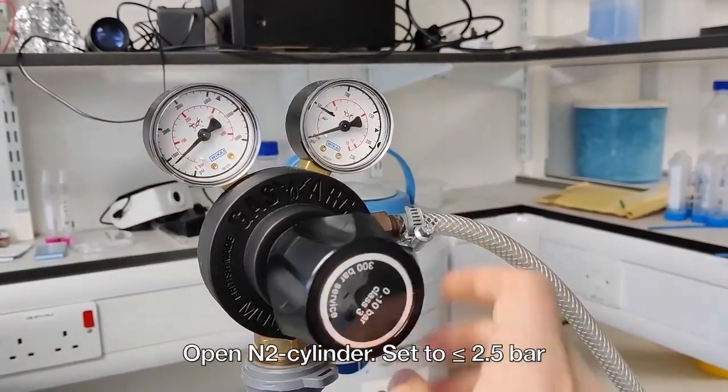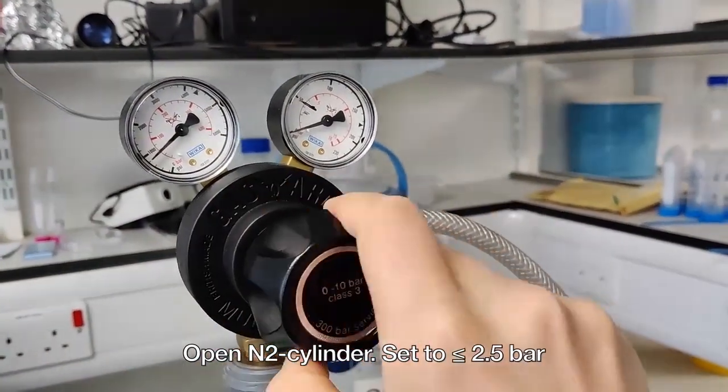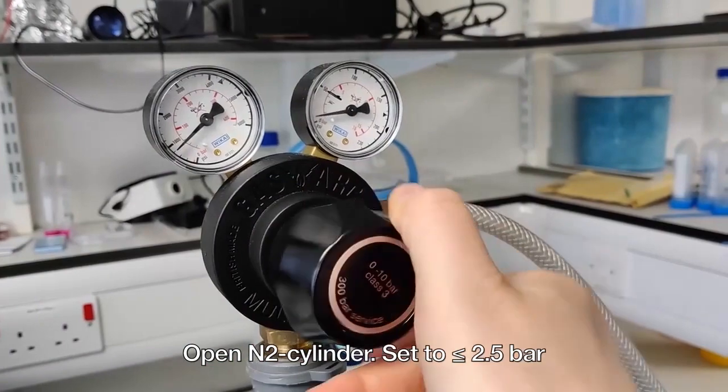Pressurized nitrogen gas is needed to generate the spray. Open the nitrogen cylinder and set the pressure to 2 bar.